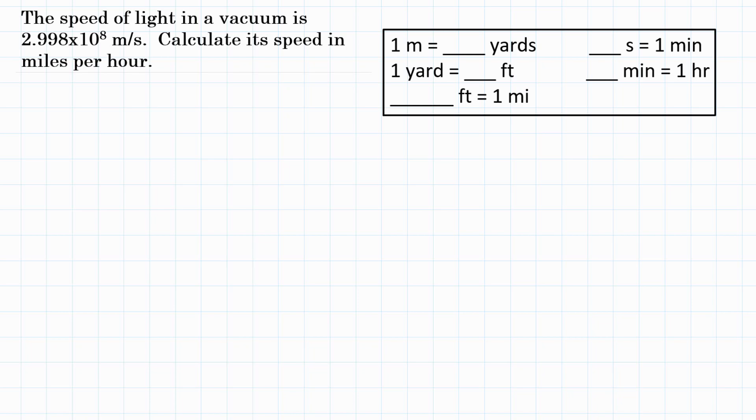All right, the speed of light in a vacuum is 2.998 times 10 to the 8th meters per second. Calculate its speed in miles per hour.